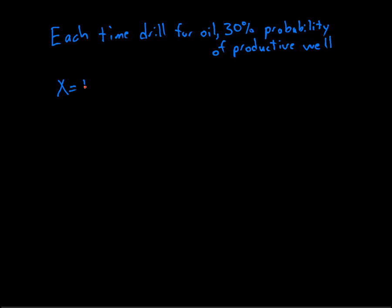My random variable here - any time you have a geometric it's a waiting time. So the random variable is going to be the number of times we have to drill. It includes that time when we do have a success, in this case when we get a productive well. So the number of times we have to drill to get a productive well.